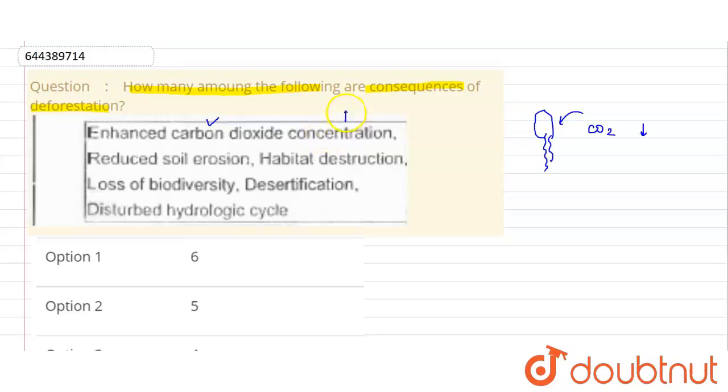Reduced soil erosion. Now the roots of the trees, they bind tightly with the soil. No trees, what will happen? There will be loose soil. Loose soil, wind will blow, water will flow.